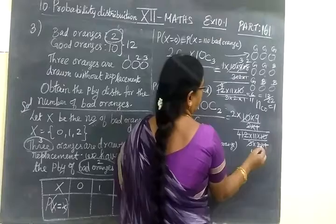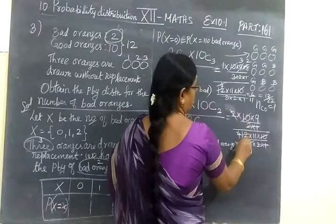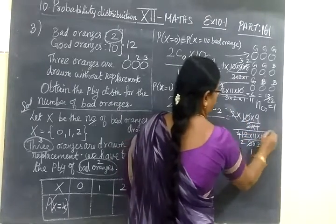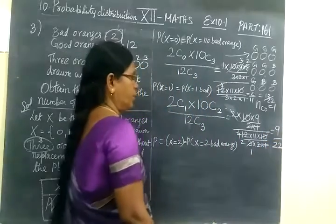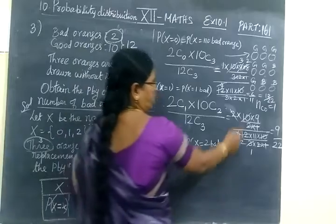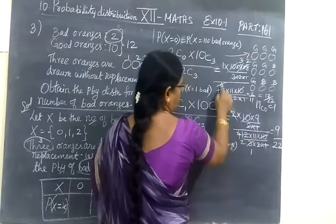This 2, this is 2. So answer 2 into 11, so 9 by 22. Denominator is 22. That's why here also I make it as 22.